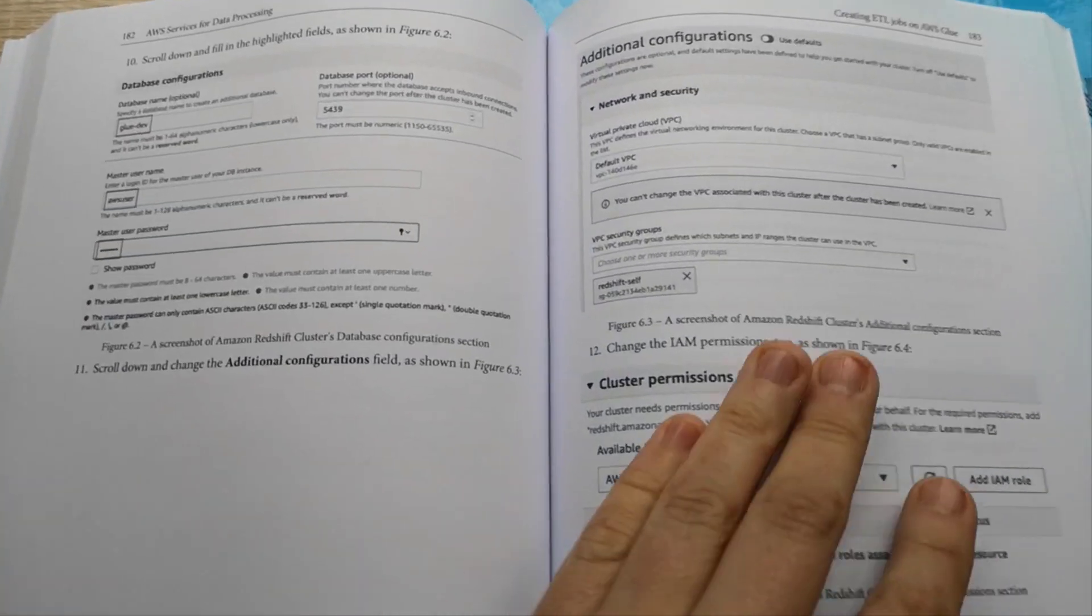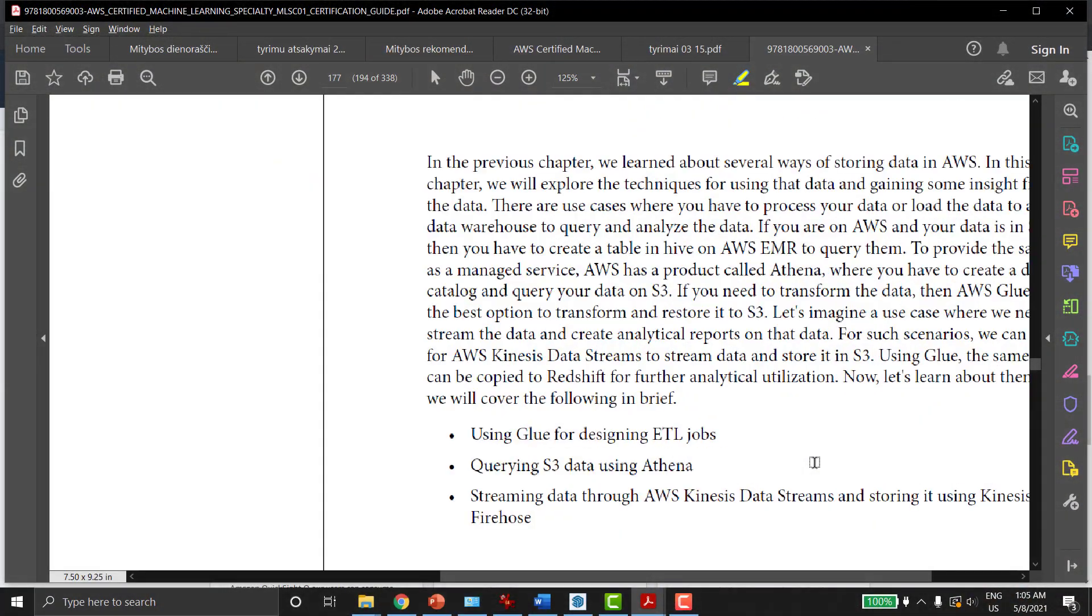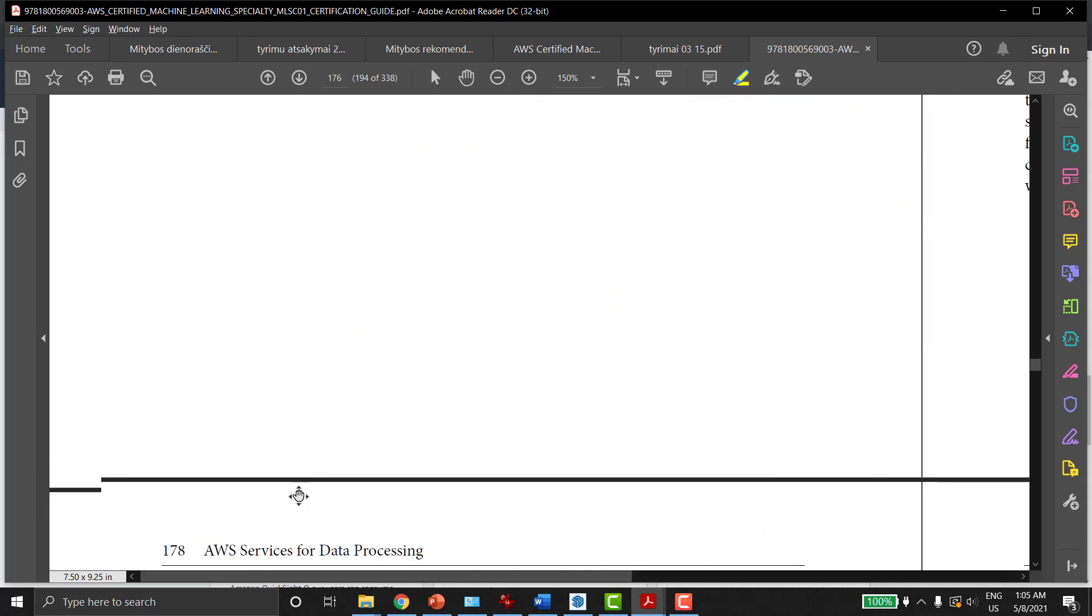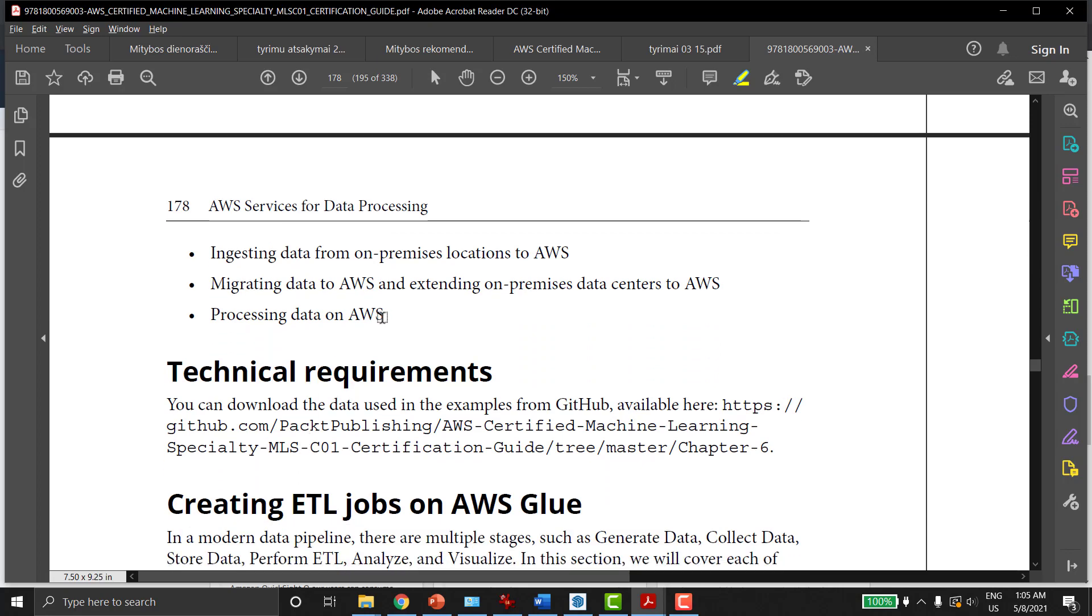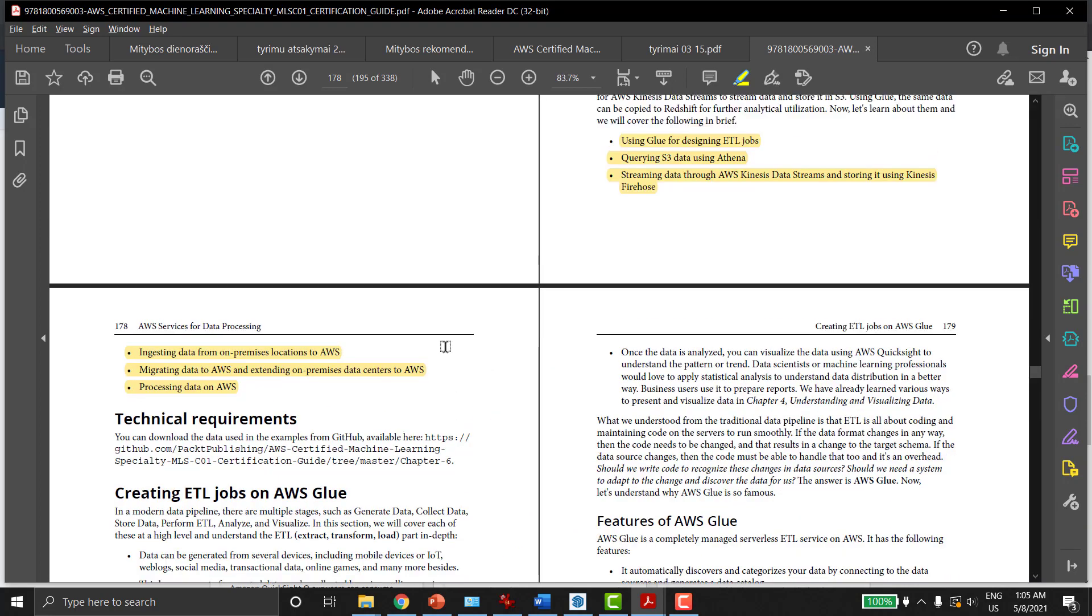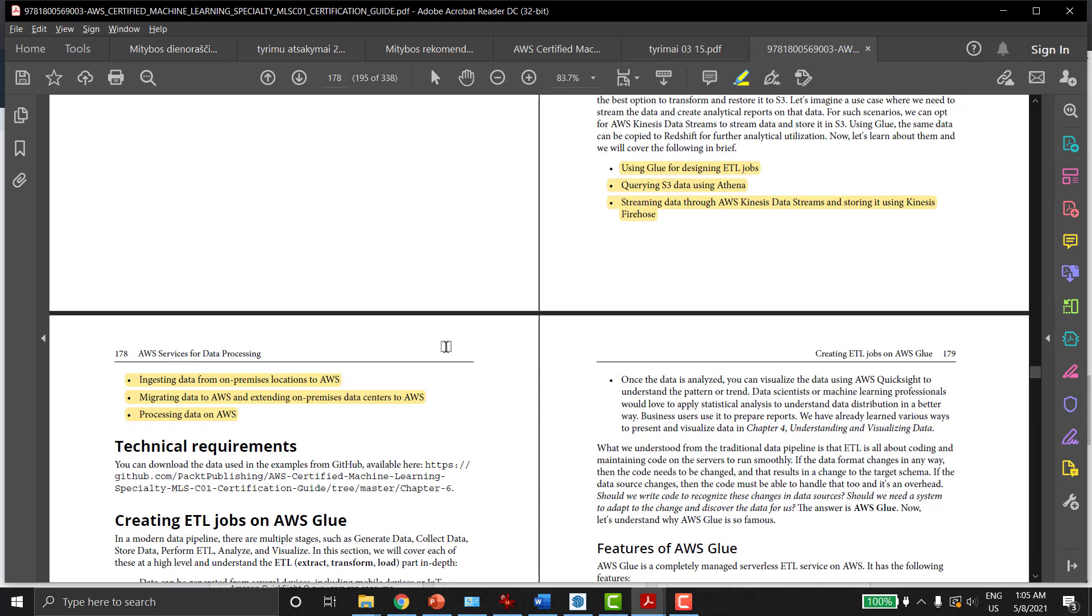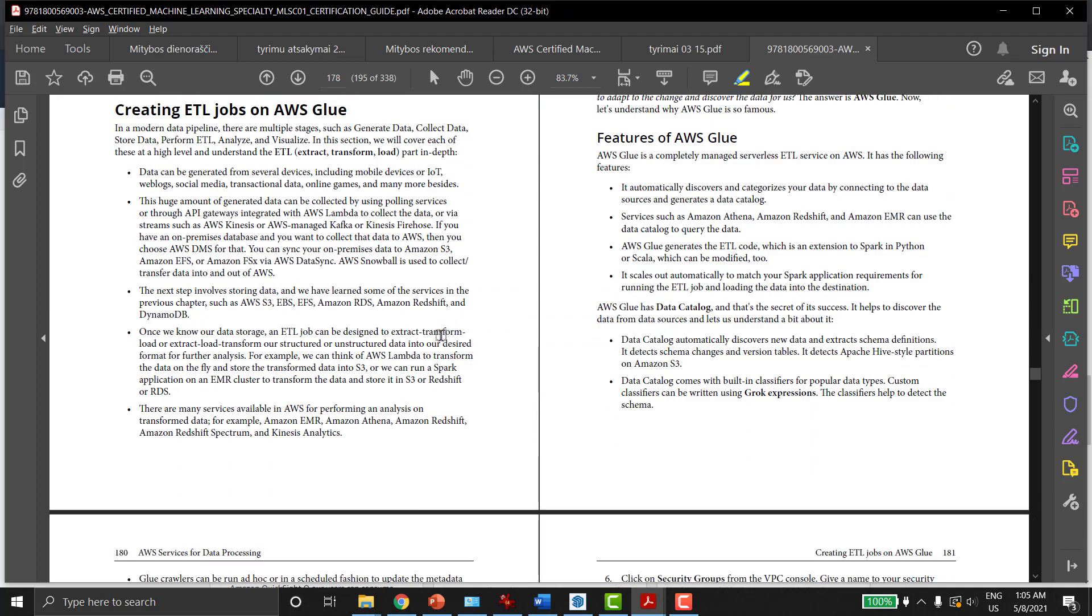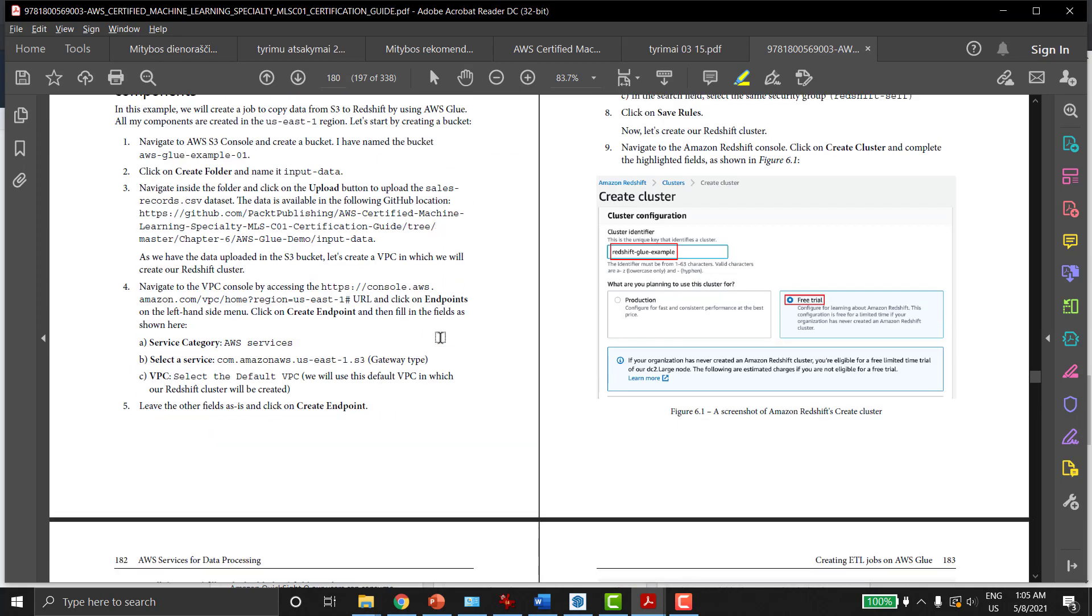Let's look what this section is about in more structural way. Using Glue for designing ETL jobs. Querying S3 data using Athena. Streaming data through AWS Kinesis data streams and storing it using Kinesis Firehose. Ingesting data from on-premise location to AWS. Migrating data to AWS and extending on-premise data centers to AWS. Processing data on AWS.